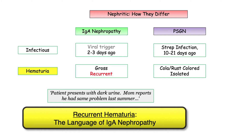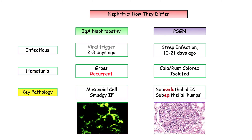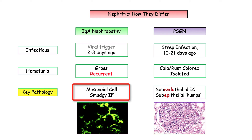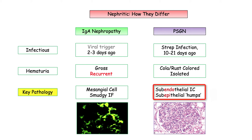This is a third major distinguishing feature. The information on infection and hematuria is to set up the diagnosis, but the majority of test questions will target the pathology. As with all glomerulopathies, the pathology derivatives make up the majority of questions. For IgA nephropathy, you need to know mesangial cell involvement and that smudgy appearing immunofluorescence. For post-streptococcal, be aware that circulating immune complexes deposit in the sub-endothelial space triggering the acute proliferative response, and those same immune complexes can also be found in the sub-epithelial space, described as humps.